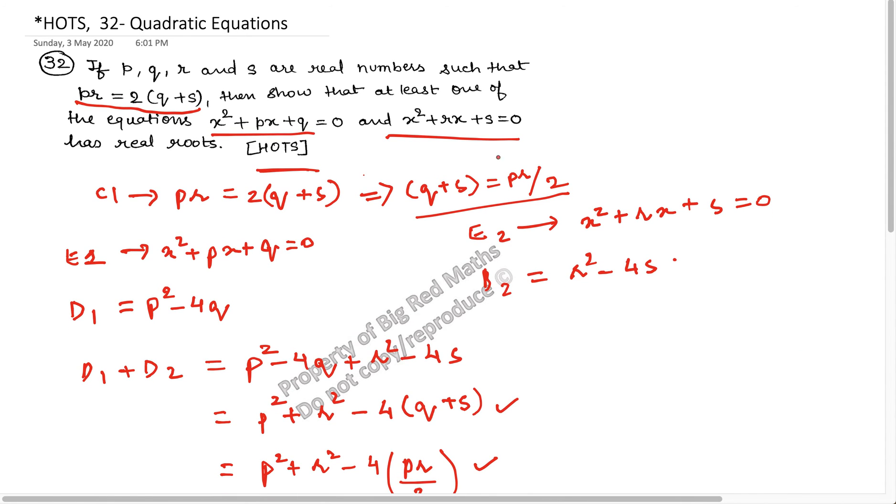Show that at least one of the equations has real roots. So at least one of them, either of D1 or D2, one of them is greater than equal to zero. And the moment one of them becomes greater than zero, we know that the roots are real. And that is the solution to the question.